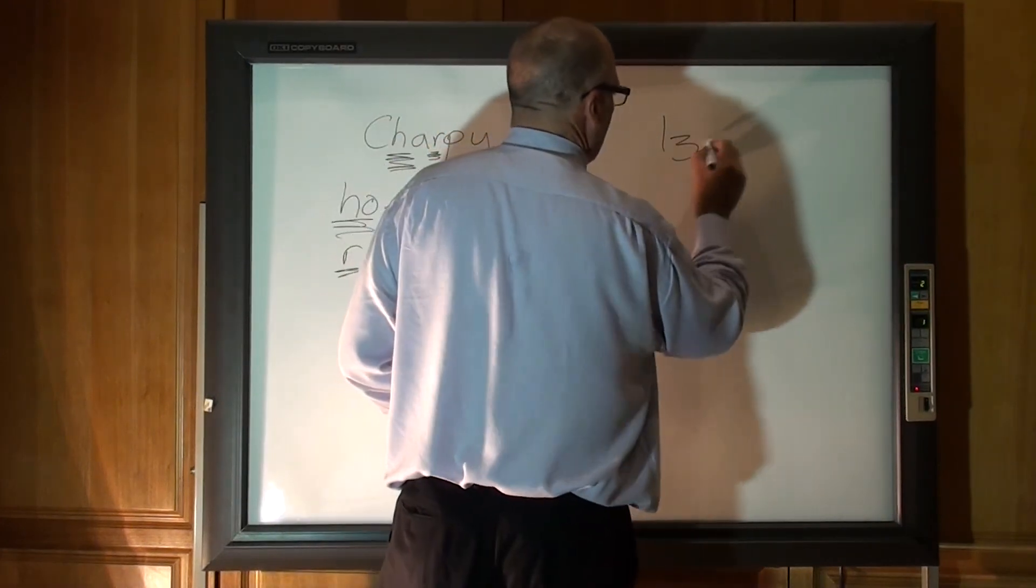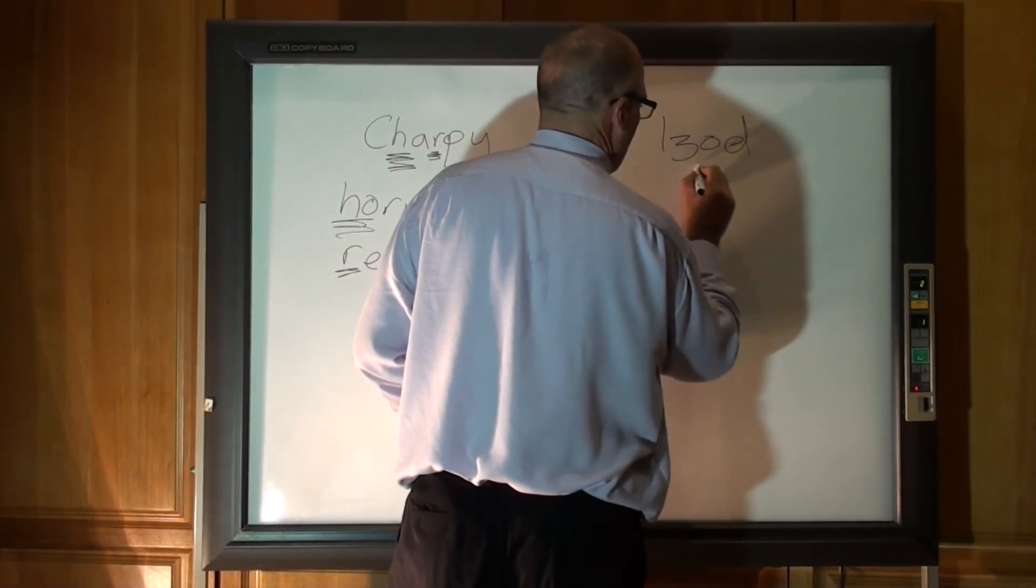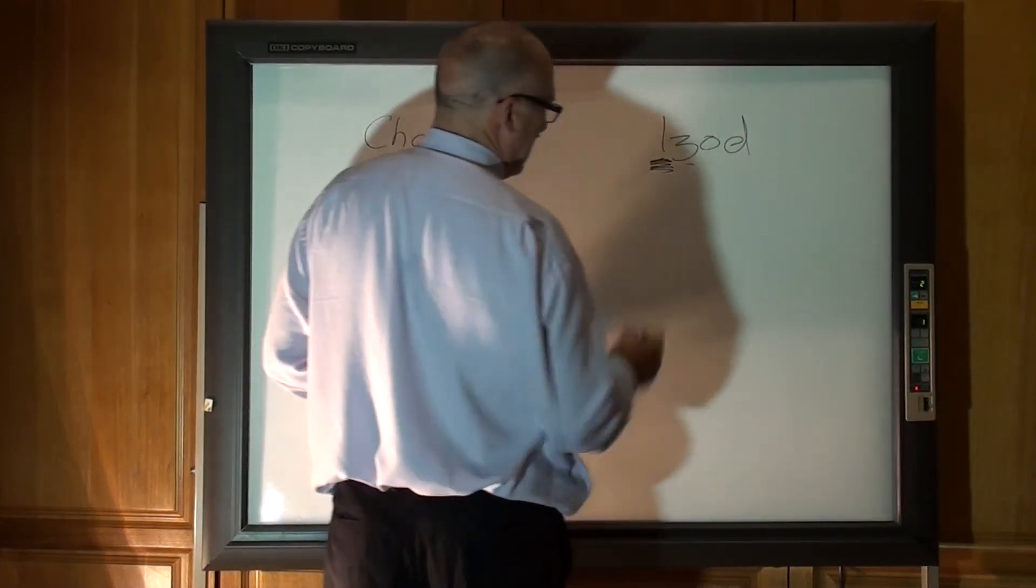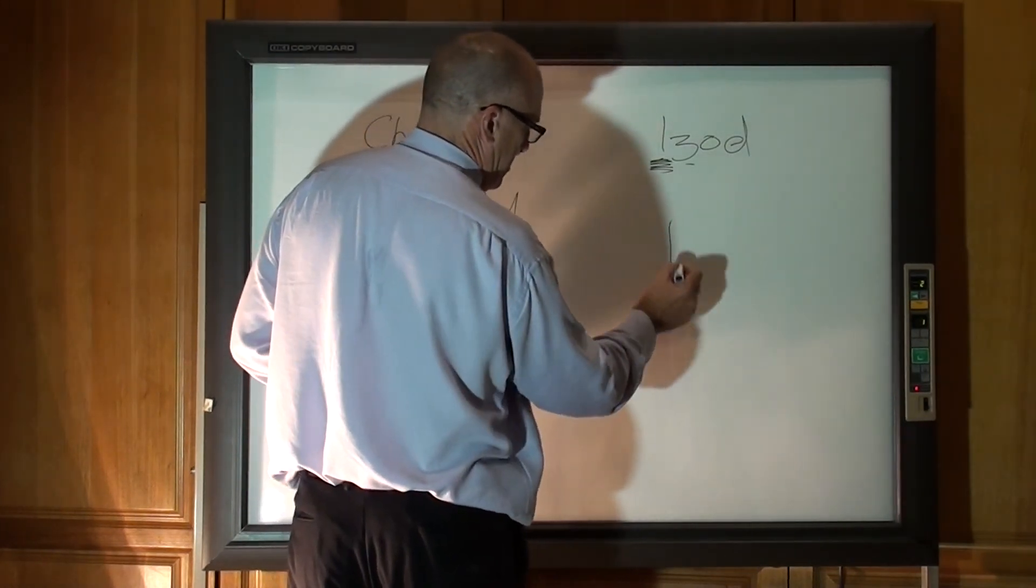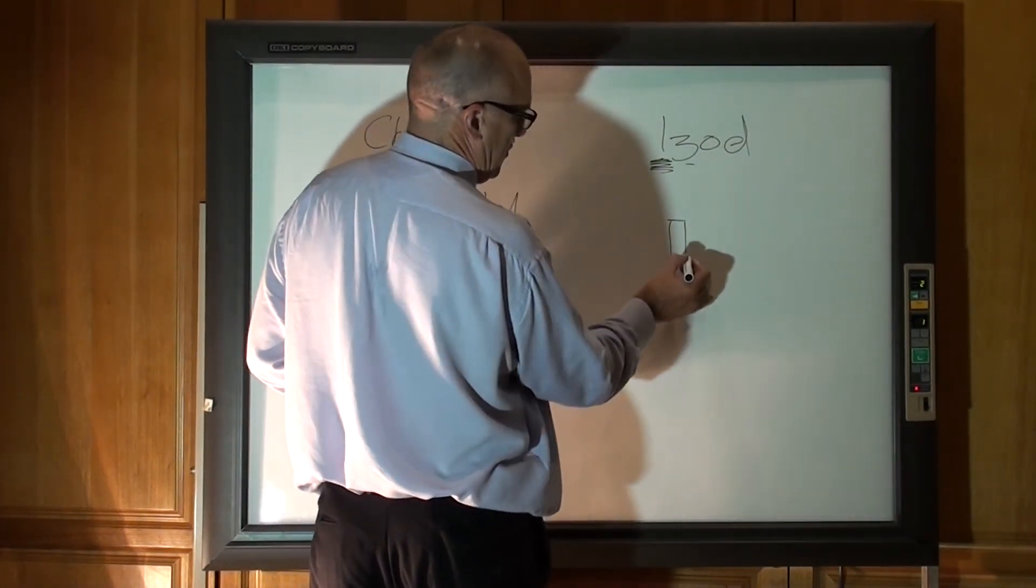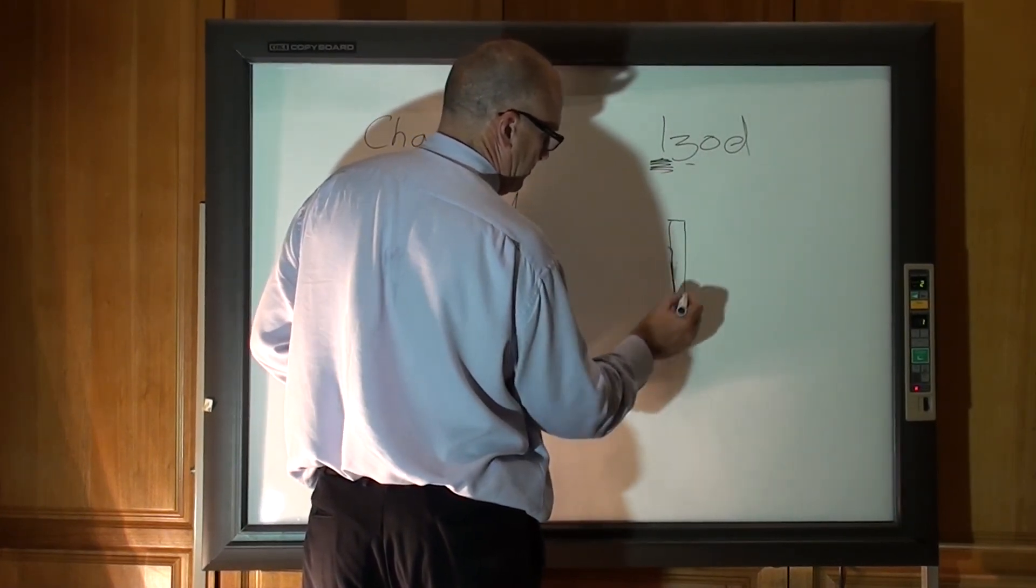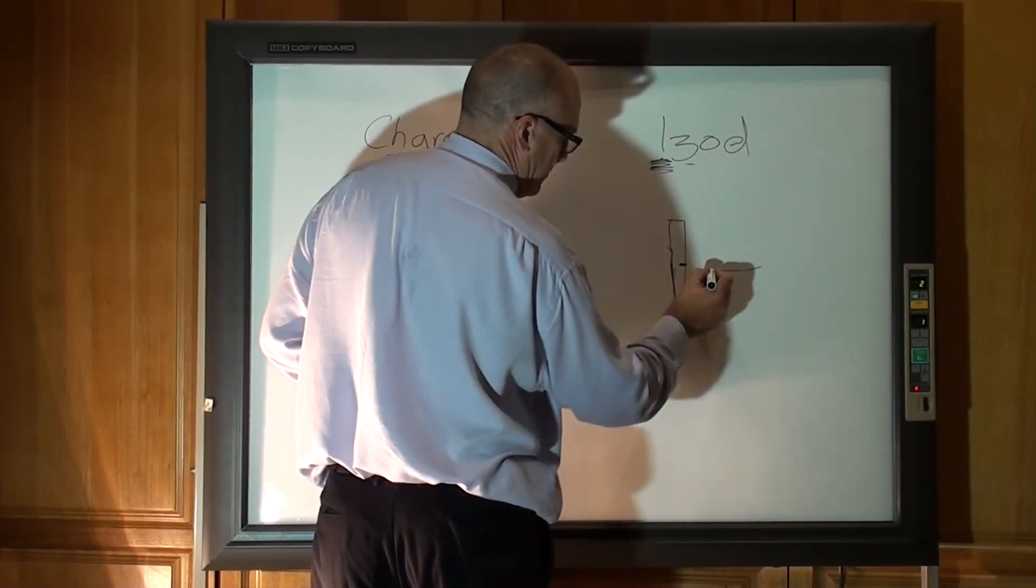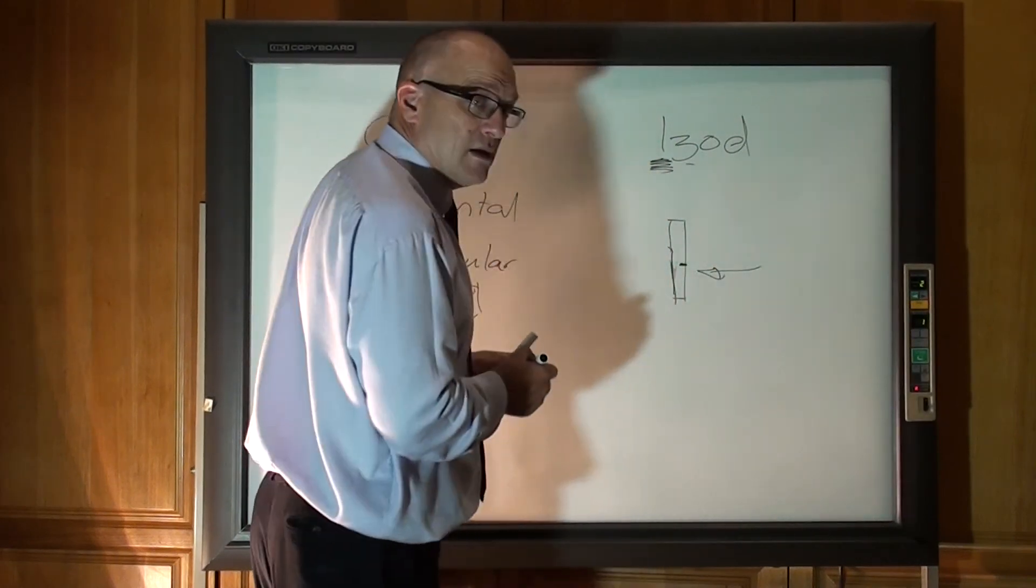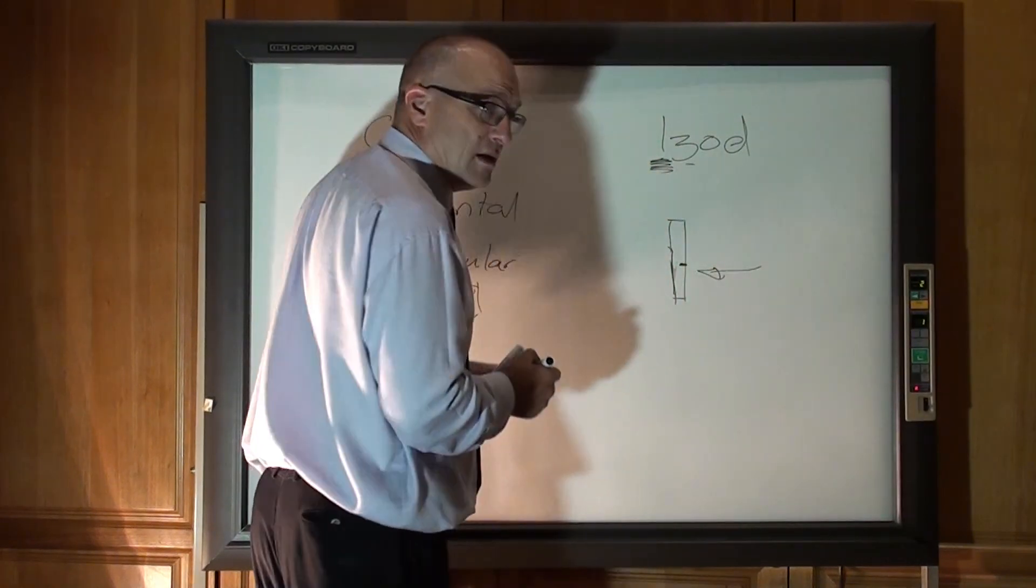IZOD, I side, I because it's vertical. The hammer swings that way. The IZOD test also has a circular cross section of the test piece. The notch faces the hammer as I've drawn it. I've made a mistake in the next part of this video.